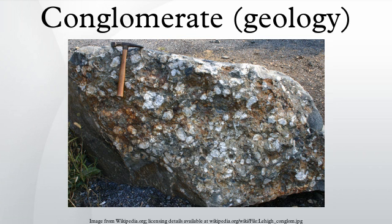Two recognized types of intraformational conglomerates are shale pebble and flat pebble conglomerates. A shale pebble conglomerate is a conglomerate composed largely of clasts of rounded mud chips and pebbles held together by clay minerals, created by erosion within environments such as within a river channel or along a lake margin. Flat pebble conglomerates consist of relatively flat clasts of lime mud created by either storms or tsunamis eroding a shallow sea bottom, or tidal currents eroding tidal flats along a shoreline.